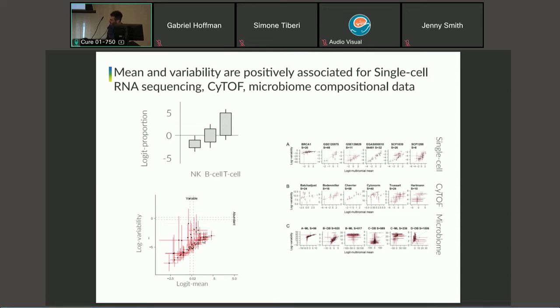These are the estimates with credible intervals there. If we plot the logit mean and log variability, we see a quite striking linear association. We can use this for doing shrinkage of the estimates. For example, for rare cell types where we don't have so much data, we can estimate more accurately the variability, knowing the mean and transferring information about all cell types.